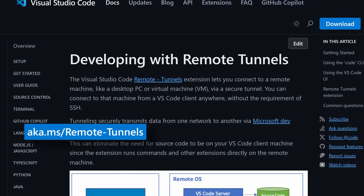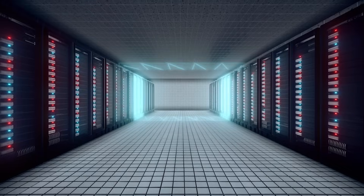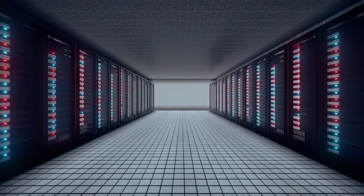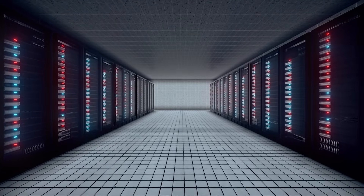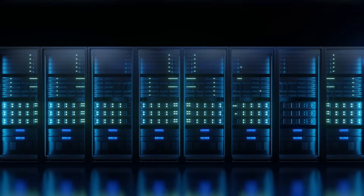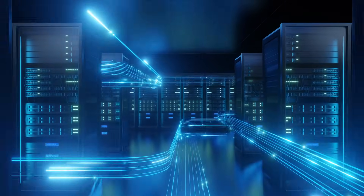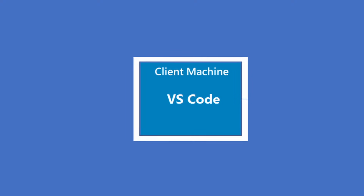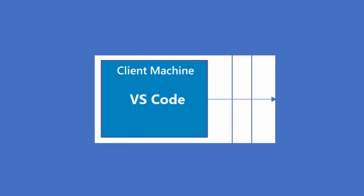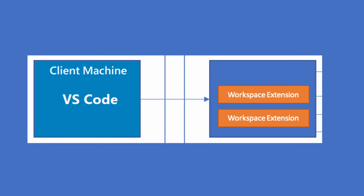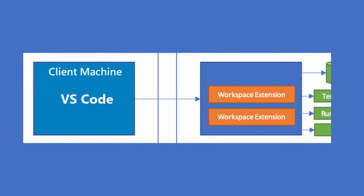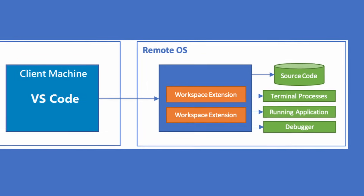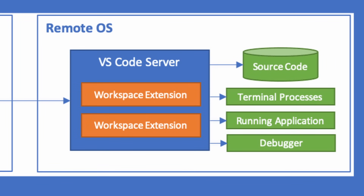You can find more details on it here. Tunneling is a networking concept that involves creating a secure and direct connection between two separate networks or devices, allowing data to be transmitted privately across different networks or the internet. With VS Code tunnels, you can effectively eliminate the need for source code to be on your client machine, because the extension runs commands and other extensions directly on the remote machine — made possible by the VS Code server.